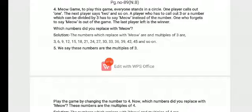One who forgets to say meow is out of the game. So the last player is the winner. For example, if someone has 36 numbers, then you don't say 36, you say meow. Okay, now let's see the questions.